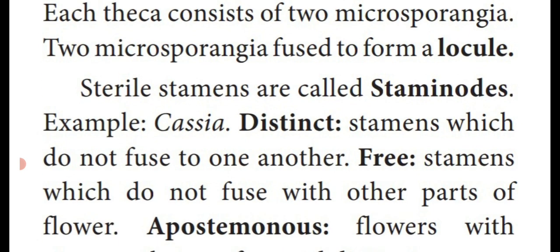In some plants, the stamen which is the individual unit of androecium, is responsible for reproduction. But in some plants, the stamen which does not take part in the reproductive process — those stamens are known as sterile stamen or staminode. Staminode means the stamen does not take part in reproduction — sterile stamens are known as staminode. Example: Cassia.